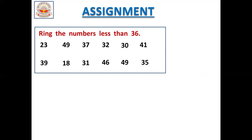First one, 23. Is 23 a small number or big number compared to 36? It is a small number, so we should circle it. Now 49 — is 49 big or small compared to 36? It is a big number, so we should not circle it. Now 37 — is 37 a big or small number compared to 36? It is a big number, so we should not circle it. Now 32 — is 32 a big or small number? It is a small number compared to 36, so we should circle it.